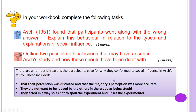There are a number of reasons participants gave for why they conformed to social influence in ASH's study. These included that their perception was distorted and that the majority's perception was more accurate; they did not want to be judged as stupid; and they acted so as not to spoil the experiment and upset the experimenter — that final reason being social desirability. That brings us to the end of this lesson. See you for lesson four.